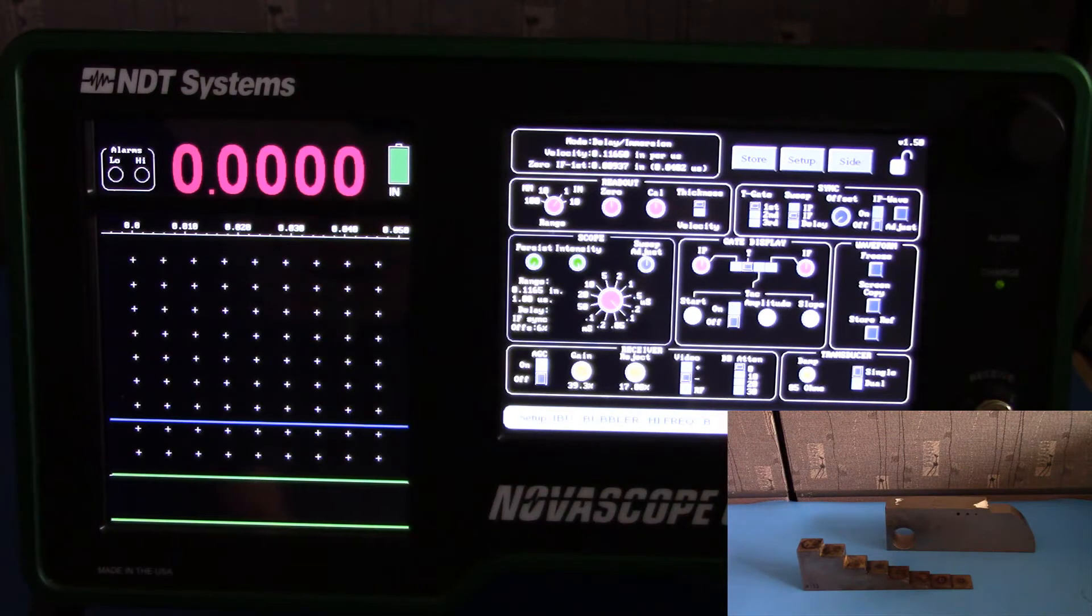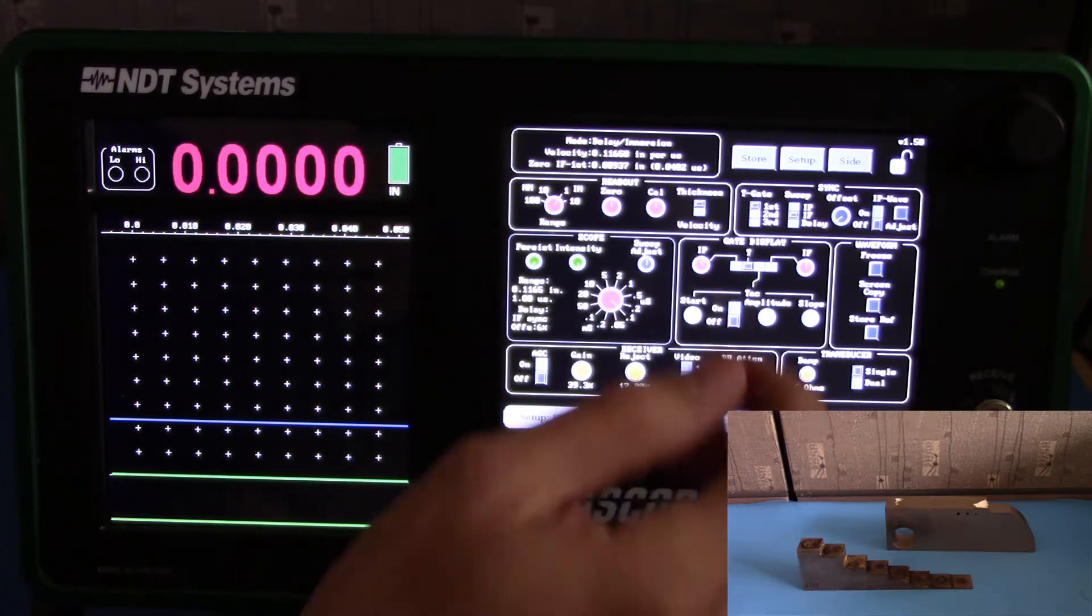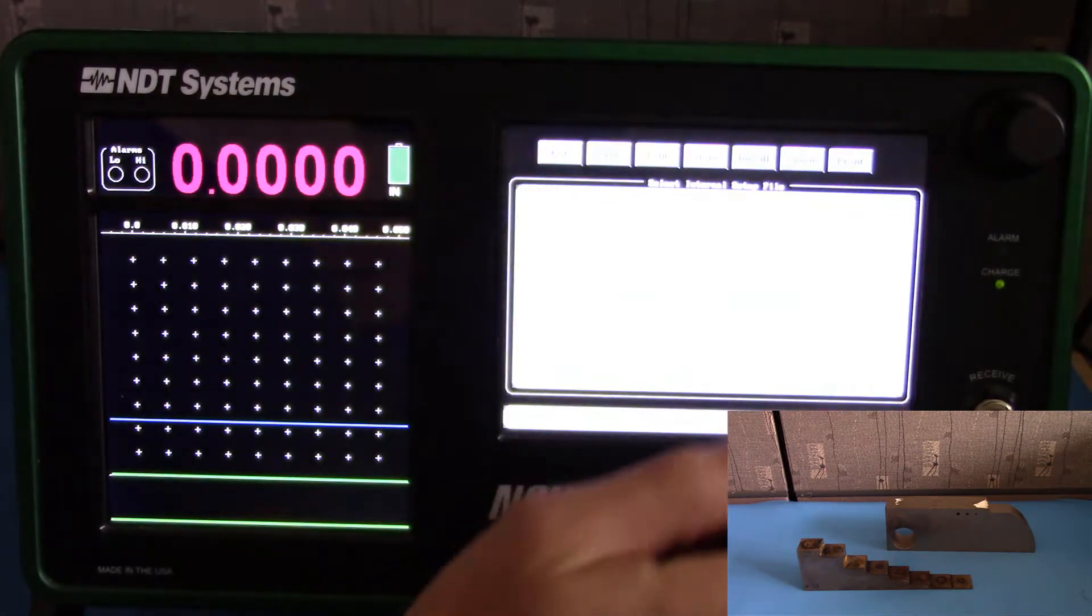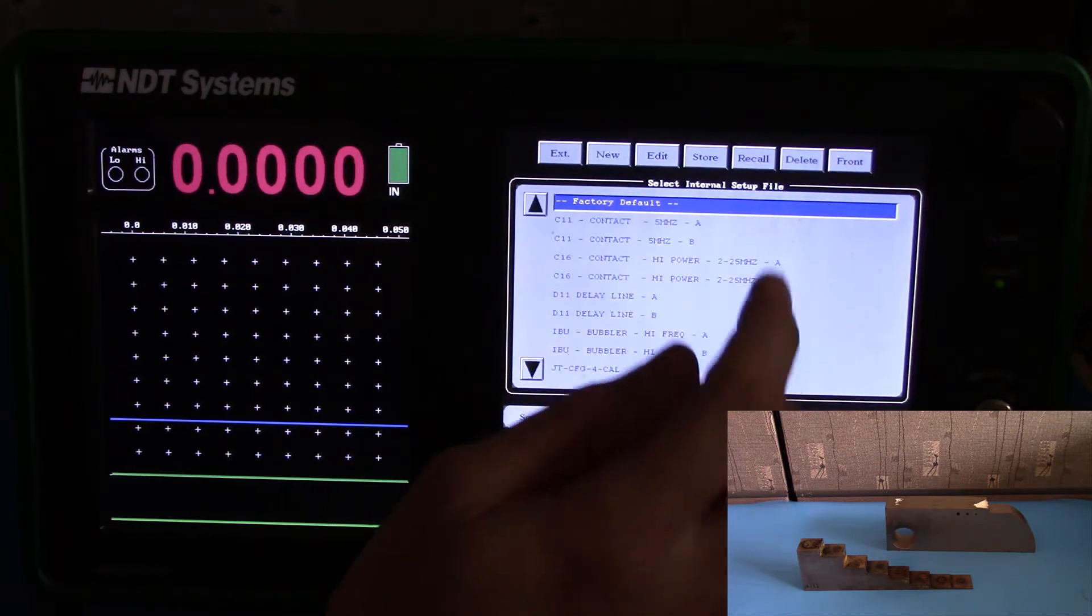To begin calibrating the Novoscope for contact probes, first we'll need to verify that the settings on the Novoscope are at the factory default. To do this, go to the Setup menu located on the top of the screen, navigate to Factory Default, and hit Recall.